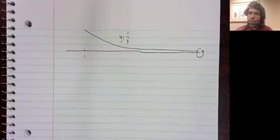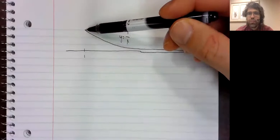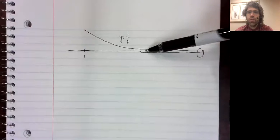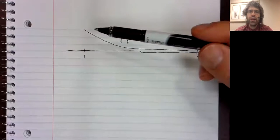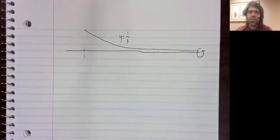Gabriel's Horn is the solid of revolution you get, or the surface of revolution you get, from taking the curve y equals one divided by x, and rotating it around the x axis.